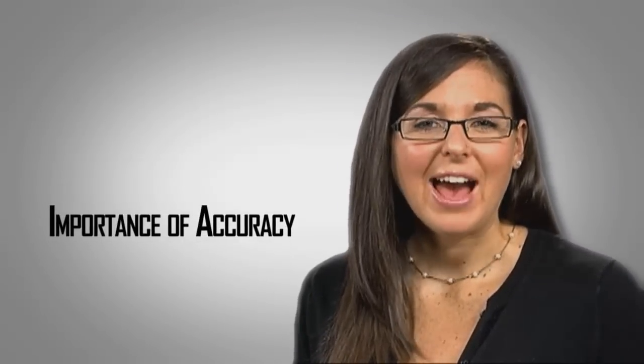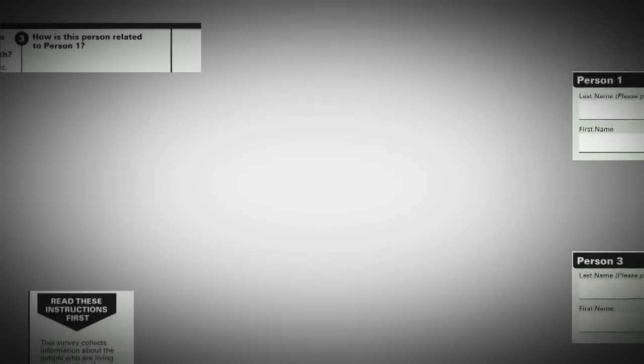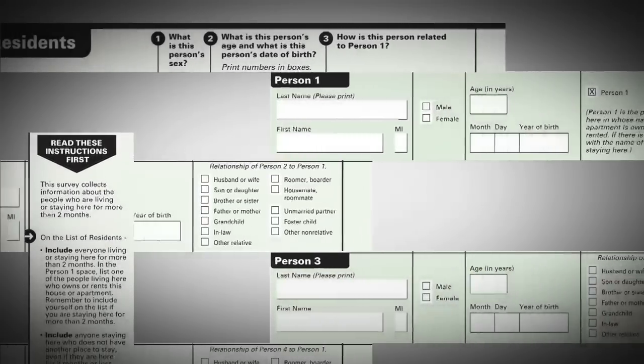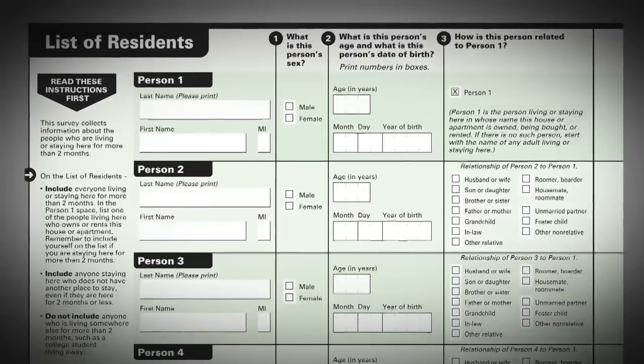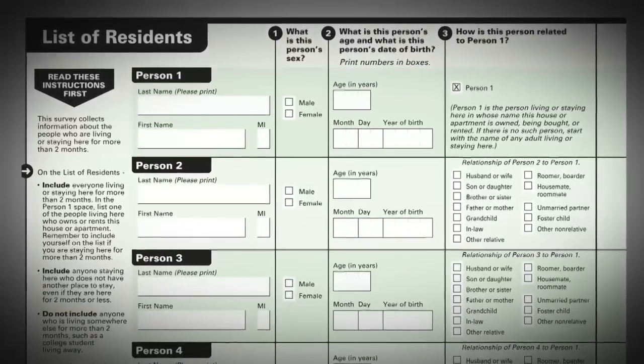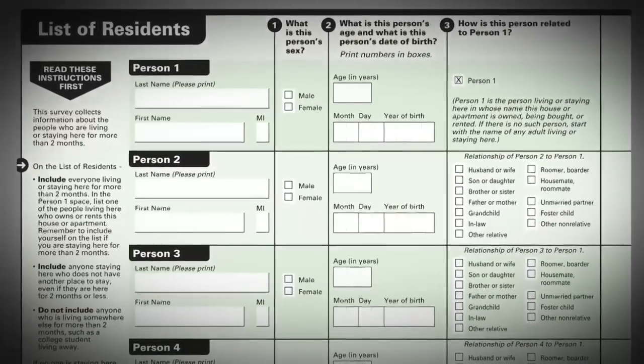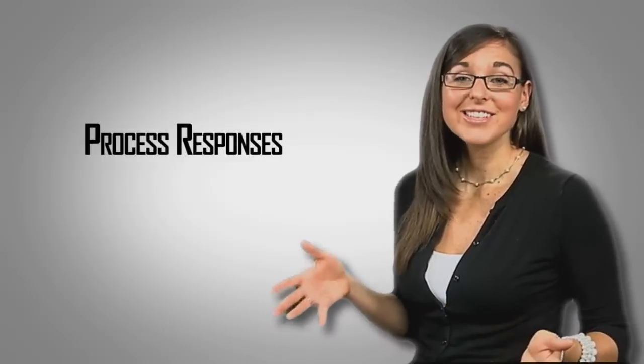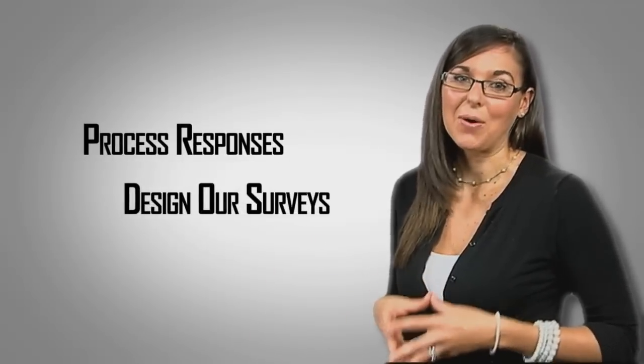Through this example, we can see the importance of accuracy. In our work, we know that the design of a form can affect how people answer the questions and even introduce errors into the process. A data capture error can happen when the human eye misreads or skips wording on a survey questionnaire.